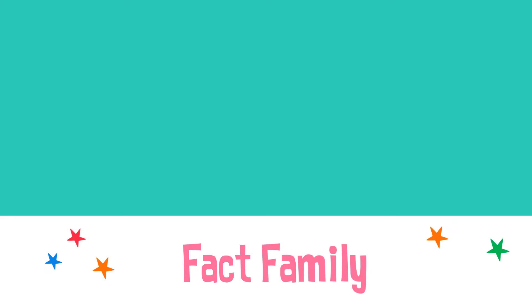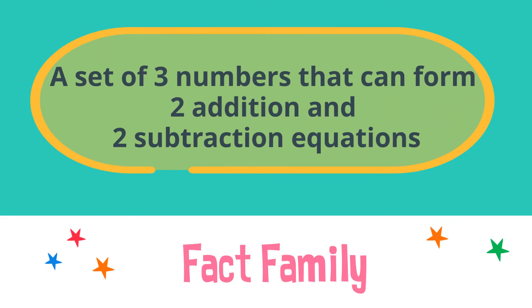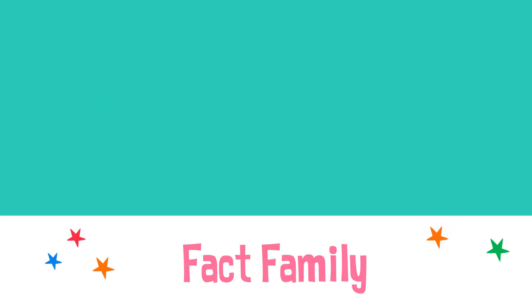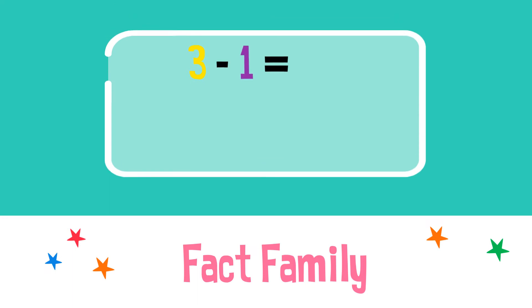A fact family is a set of three numbers that can form two addition and two subtraction equations. Let's use this equation as an example. Three minus one equals two.